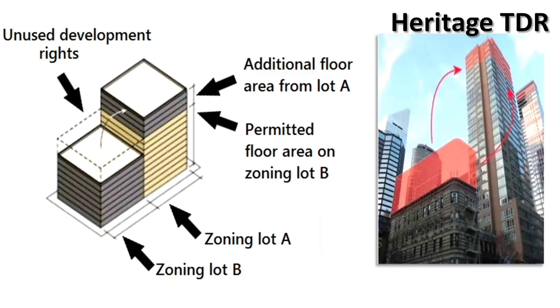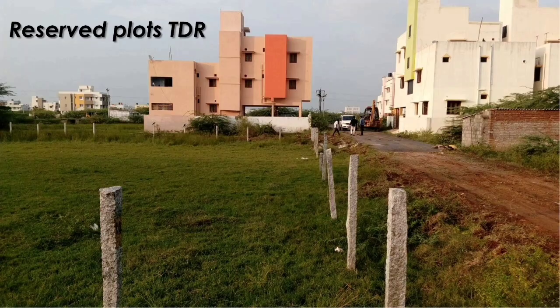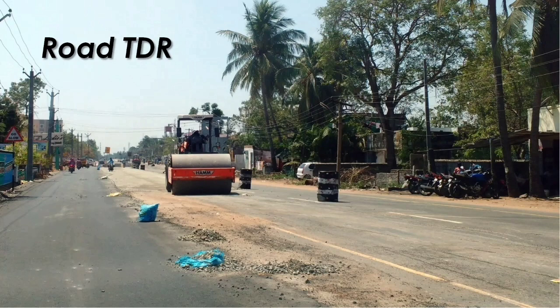Heritage TDR helps in the restoration of heritage buildings — the unbuilt FSI is transferred to other buildings, as shown on screen. The award of Development Rights Certificates (DRC) to landowners is for the surrender of land reserved for public purposes proposed under the development plans. Road TDR: Road widening is required to keep up with the phenomenal increase in vehicular population, and the purpose of Road TDR is to obtain land accessibility for road widening.